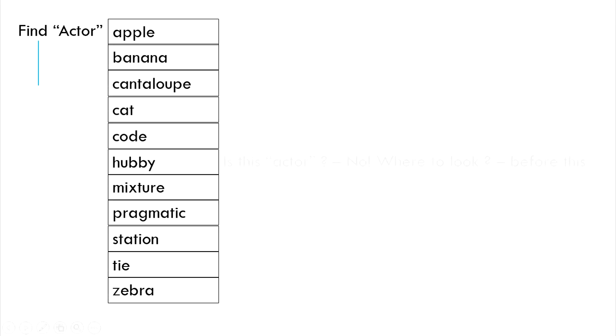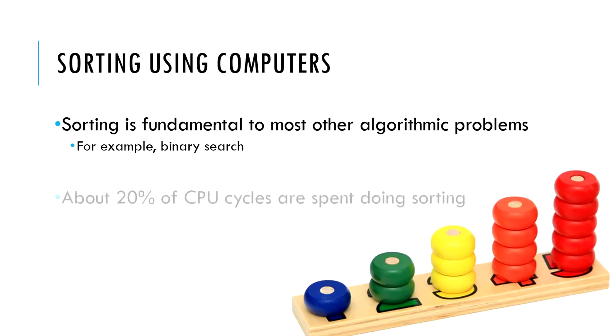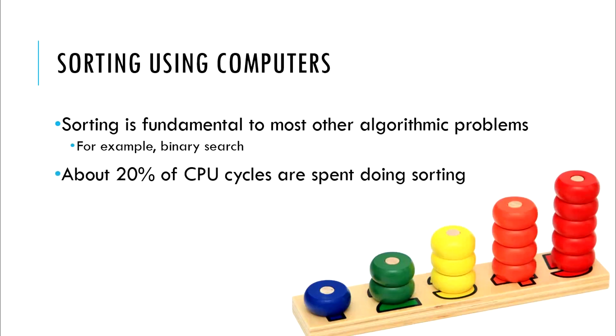The search steps are logarithmically reduced in the binary search. This search technique assumes that the original search domain is sorted. The importance of sorting in computers can be outlined by the fact that about 20% of CPU cycles are actually spent doing sorting.